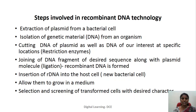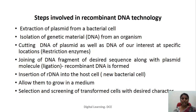The third step is cutting the DNA of the plasmid as well as the DNA of our interest at specific locations using certain enzymes called restriction enzymes, which are otherwise known as molecular scissors. This is followed by the ligation process — joining of the DNA fragment of desired sequence along with a plasmid molecule to form a hybrid DNA called recombinant DNA or RDNA. This recombinant DNA is then inserted into the host cell to form a transformed bacterial cell, which is allowed to grow inside a medium. The last step is selection and screening of the transformed cell with the desired character.